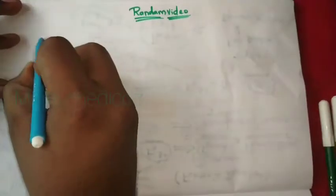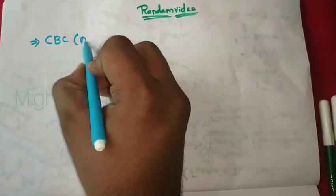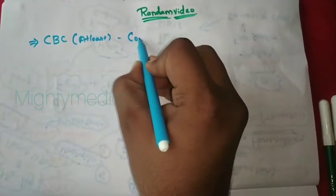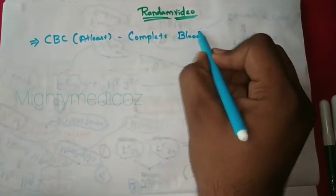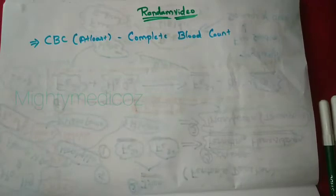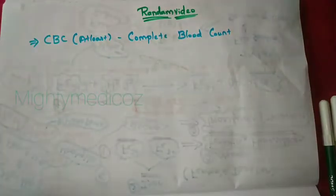Today's video is about CBC — Complete Blood Count. I will tell you about the whole CBC interpretation. It's a very important topic. There are many sub-topics within CBC, including normal RBC and Hemoglobin counts, and many other counts in this complete blood count.